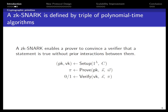ZK-SNARKs enable a prover to convince a verifier that a statement is true without direct interaction between them. A ZK-SNARK for an arithmetic circuit is defined by three algorithms. The setup algorithm takes a security parameter lambda and circuit C and generates a proving key and a verifying key. The proof algorithm takes a proving key, statement S, and witness W, and generates a zero-knowledge proof reflecting the relation between them. The verify algorithm takes a verifying key, statement S, and proof PI, and outputs one if the proof is valid, zero otherwise.